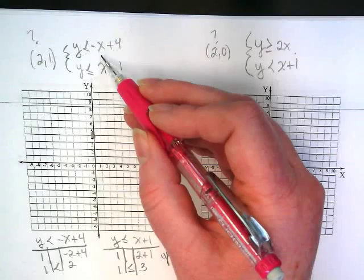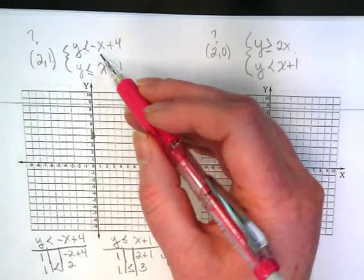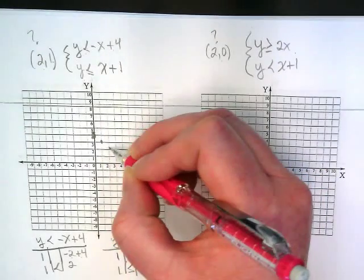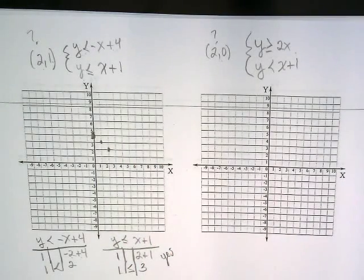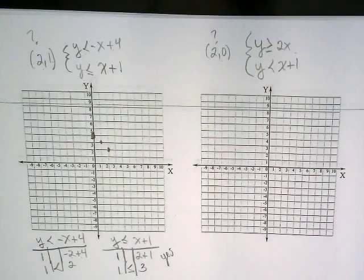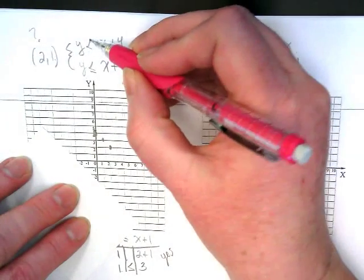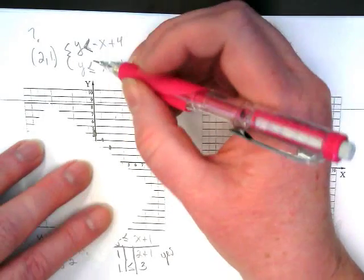Its slope is a negative what? One. It's negative one over one. So we're going to go down one and over one and do that a couple of times. I have to think about, is this a dashed or a dotted or a solid line? This is a dash.